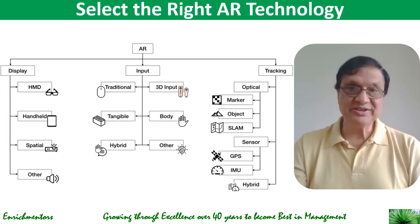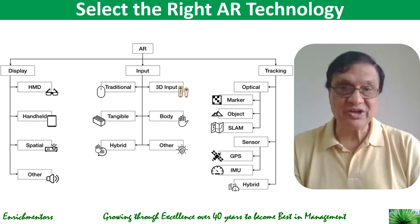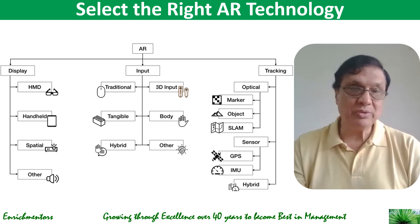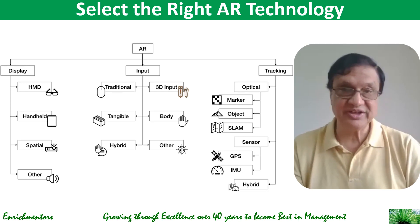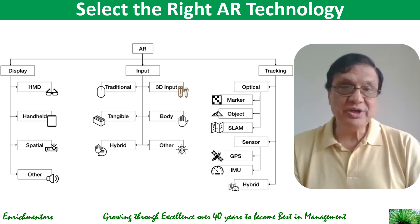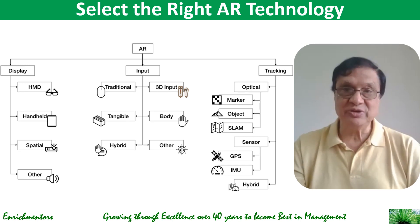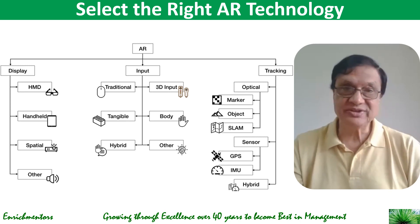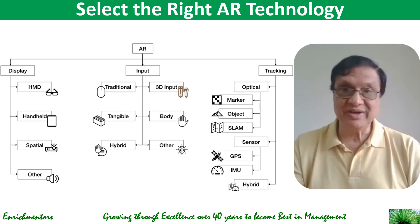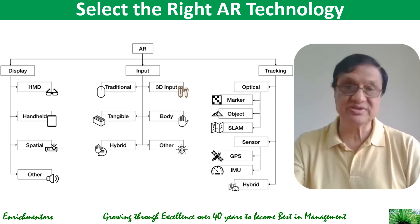The third step is to select the right AR technology. There are many options: displays such as head-mounted, handheld, spatial, and others; inputs including traditional, 3D, tangible, body, and hybrid; and tracking methods such as optical tracking, sensor, and hyper tracking. Choose the appropriate technology based on your design objectives — this could be marker-based AR, markerless AR, or a combination of both. Select the technology that aligns with your solution's requirements.